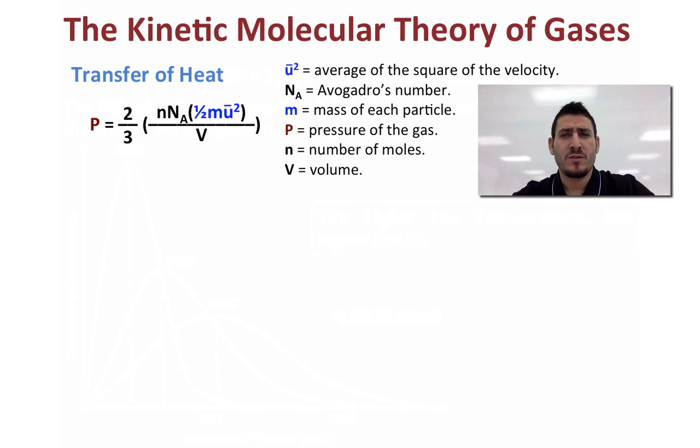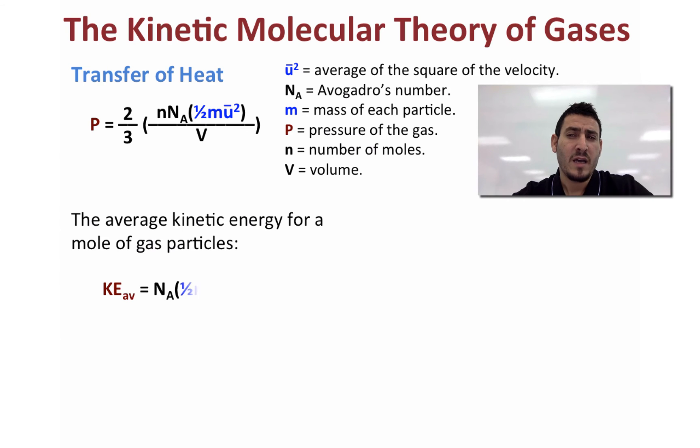Now the pressure can be found using the following expression where ū² is the average of the square of the velocity. Now NA is Avogadro's number. Small m is for mass of each particle. P is the pressure. n is the number of moles. And V is the volume. Now looking at this expression and keeping in mind that the average kinetic energy can be calculated by Avogadro's number multiplied by half mū².